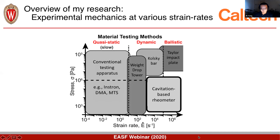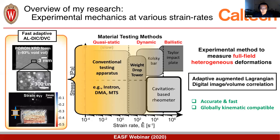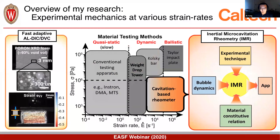I'm interested in experimental mechanics. There are many testing methods to characterize materials at various strain rates. For example, digital image and digital volume correlation are popular methods to measure full-field deformations. The challenge is: for very heterogeneous deformation fields, do we have good measurements? I have developed a new algorithm for DIC and DVC which can measure heterogeneous deformation very accurately. I'm also working on a cavitation-based rheometer to characterize soft materials at ultra-high strain rates, where the strain rates could reach a few thousand to tens of millions per second. I will talk about this cavitation-based method a little bit, and then come back to the DIC and DVC algorithms.